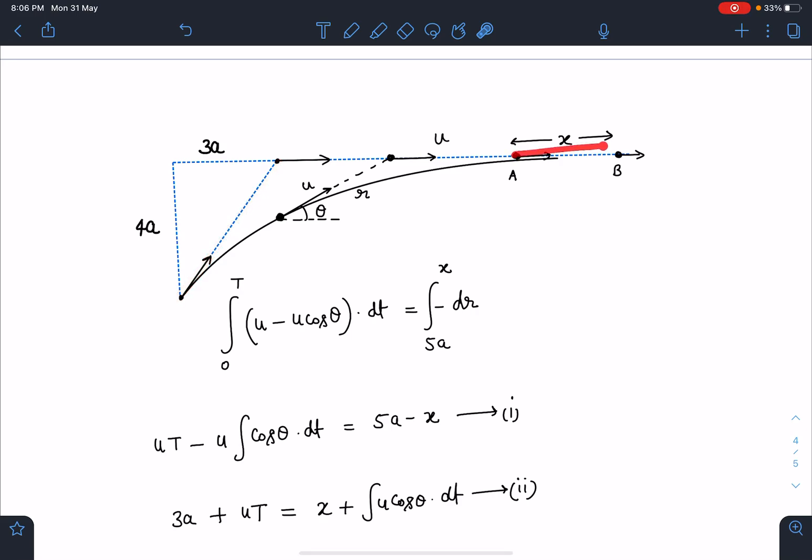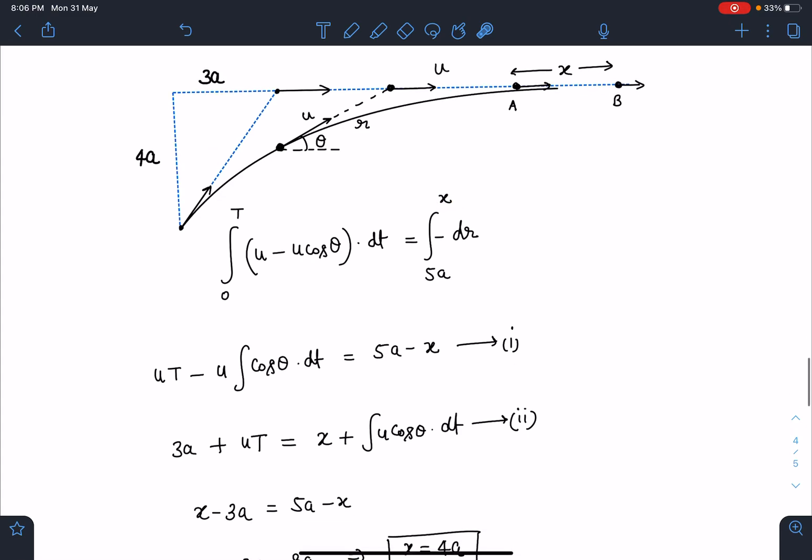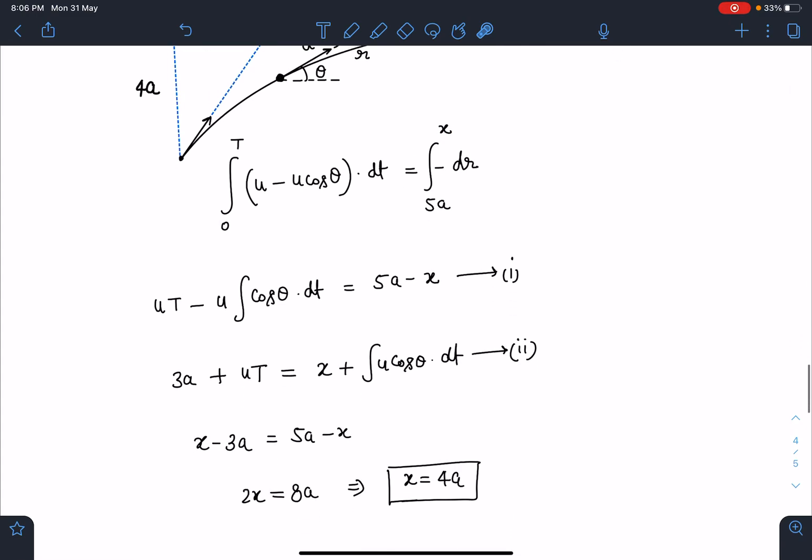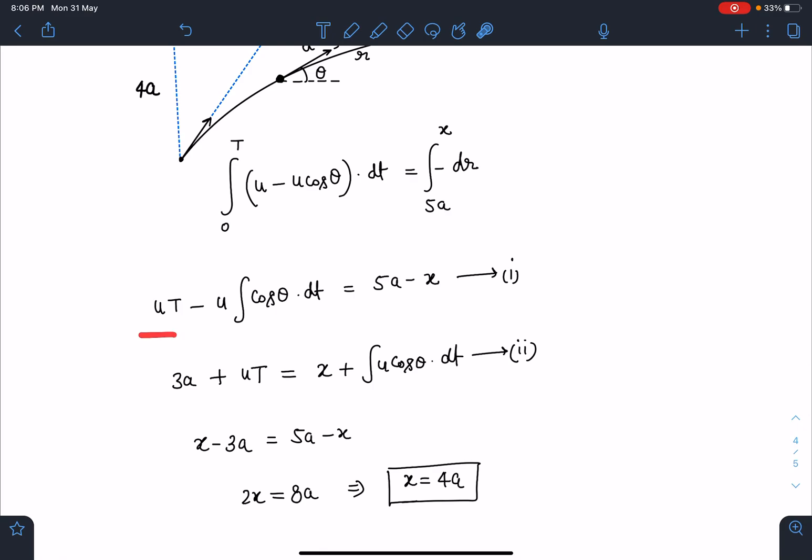When I simplify this, I am going to get this value as uT minus integral(u*cos(theta)*dt) is equal to 5a minus x. This is my equation number 1.